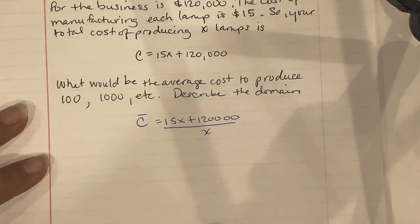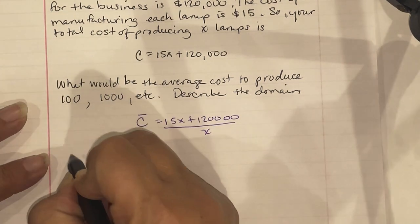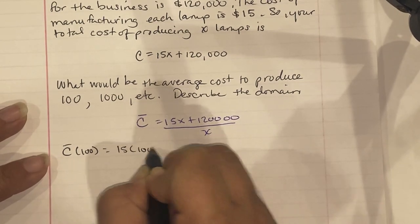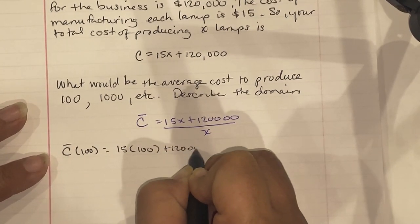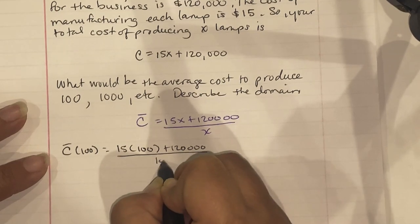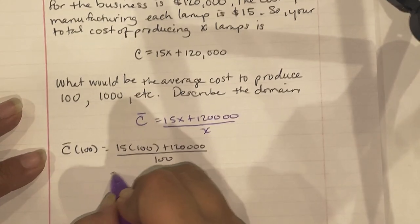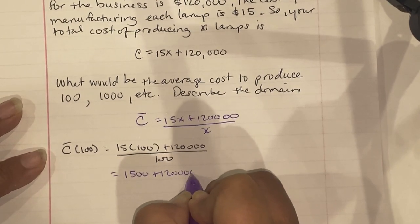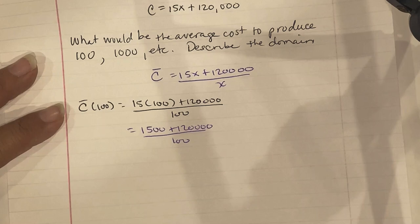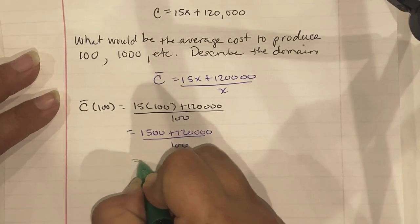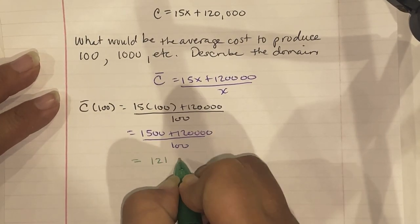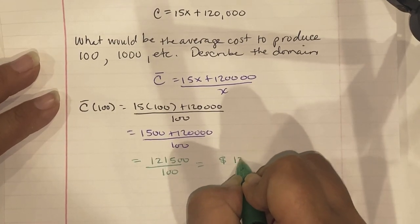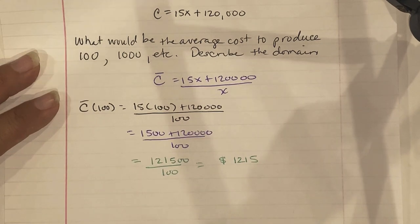For 100 lamps: 15 times 100 plus 120,000 divided by 100 equals 1,500 plus 120,000 divided by 100 equals 121,500 divided by 100. So the average cost per lamp is $1,215 for 100 lamps.